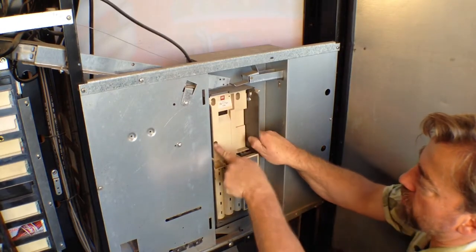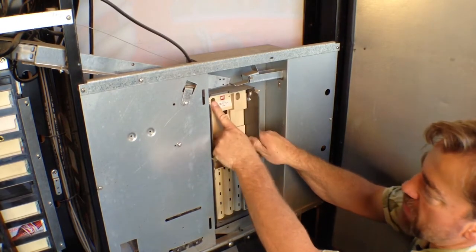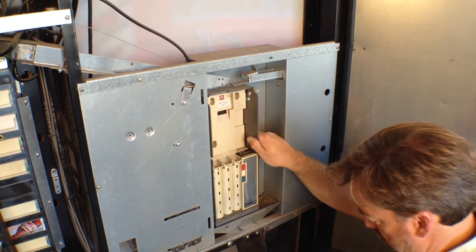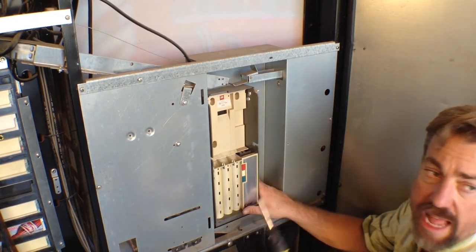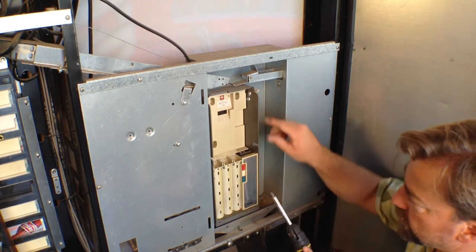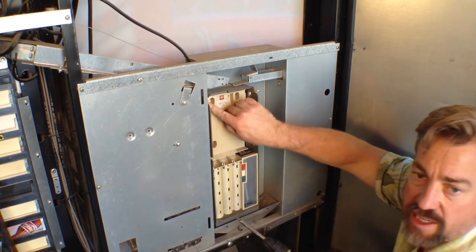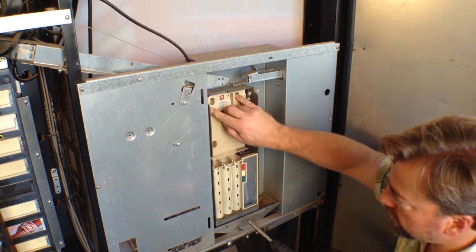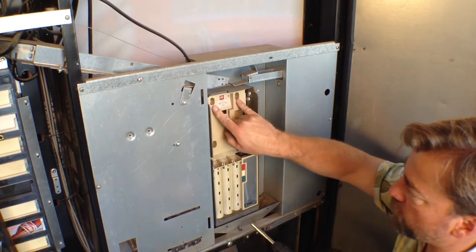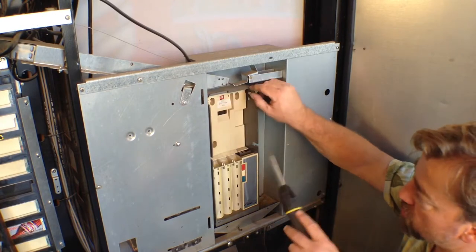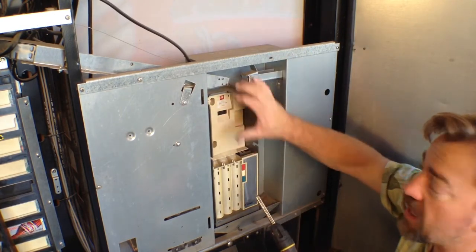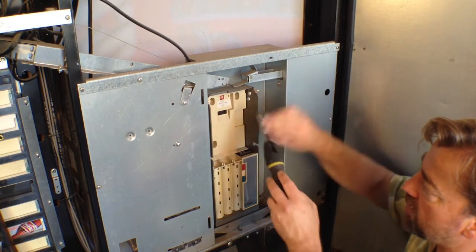There are three screws holding this coin mech in position. Now if you're in a secure facility or if this machine is firmly attached to the walls where people can't rock it you can leave these loose so it's easy to take the coin mech out. But if you're in a situation where people may rock your machine you want to make sure these screws are tightly secured at all times otherwise your coin mech can come loose and then your coins just go spilling out in the machine.